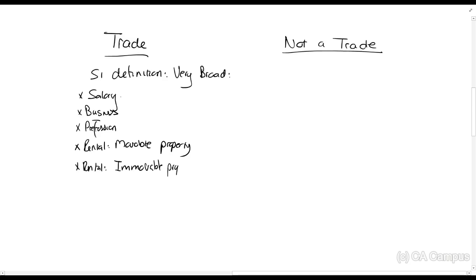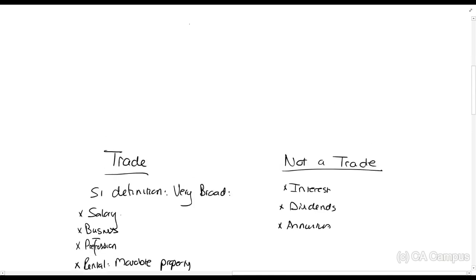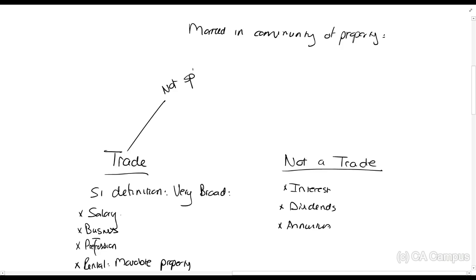What is not a trade? Not a trade includes things like interest, dividends, and annuities. Now, what section 7.2A wants to do is this: if you are married in community of property, then the trade income is not split. But income that is not a trade is split 50-50.